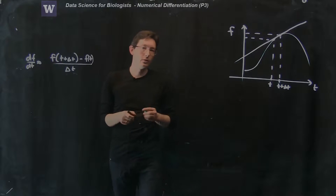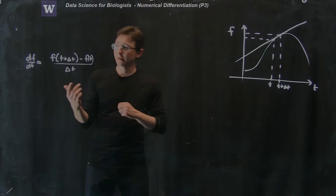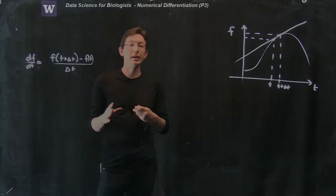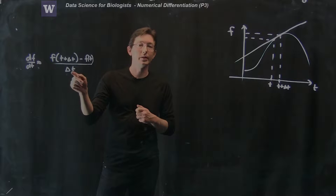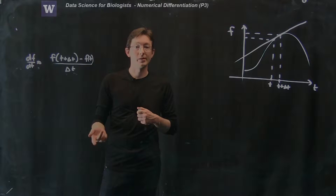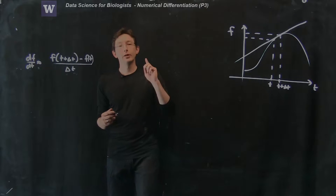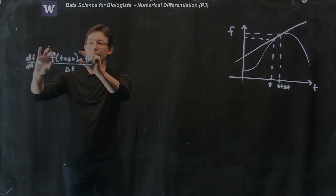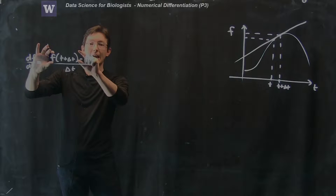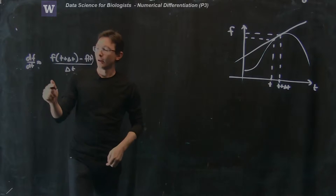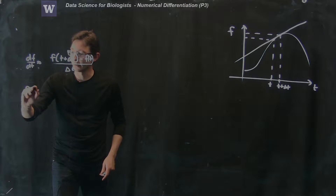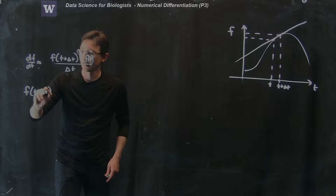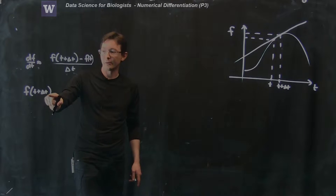What we wanted to do is figure out how close this is to the derivative — is there some error and how big is it, and how much better do we do as we make delta t smaller and smaller. In the last part, we also saw the Taylor series, so we figured out a way of writing f(t + Δt), and I'm just going to reproduce it here.